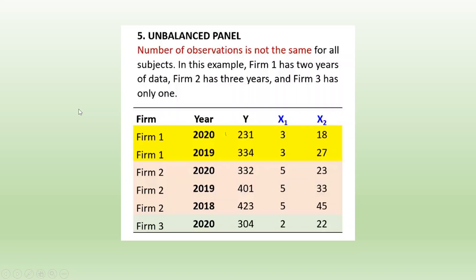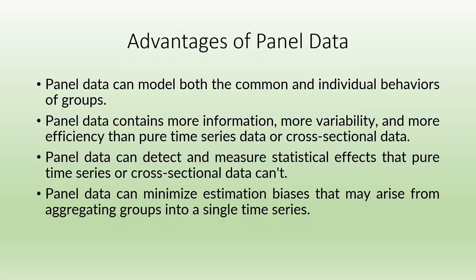In case of an unbalanced panel, the number of observations is not the same for all subjects. For example, firm 1 may have two years of data, firm 2 may have three years, and firm 3 may have only one year.